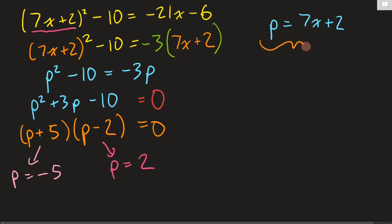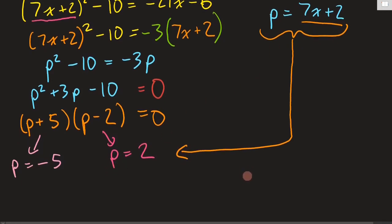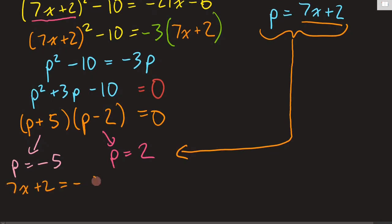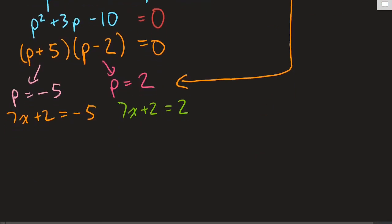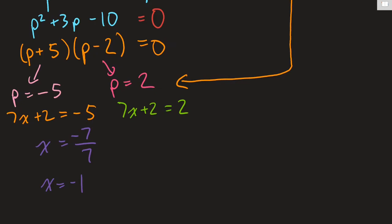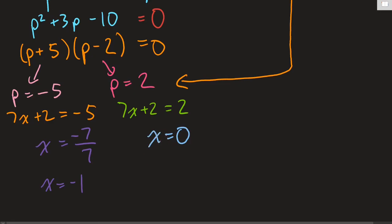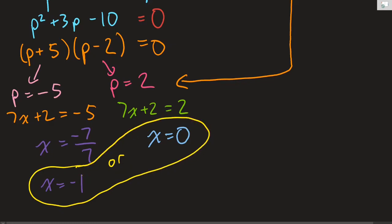Now we take our substitution and put 7x + 2 back in for p. So this gives us 7x + 2 = -5 and 7x + 2 = 2. Solving each: for the first, the positive 2 moves to give 7x = -7, so x = -7/7, which is x = -1. For the second, 2 - 2 = 0, and 0 divided by 7 is still 0, so x = 0. Our solutions are x = -1 or x = 0.